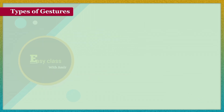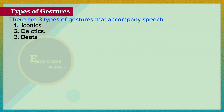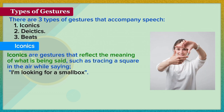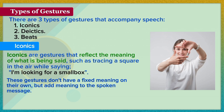There are three types of gestures that accompany speech: iconics, dyktics, and beats. Iconics are gestures that reflect the meaning of what is being said, such as tracing a square in the air while saying 'I'm looking for a small box.' These gestures don't have a fixed meaning on their own, but add meaning to the spoken message.